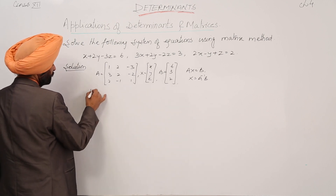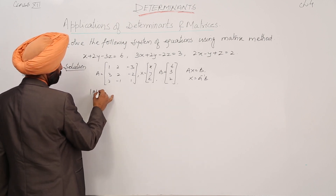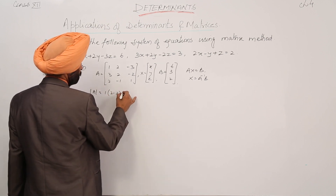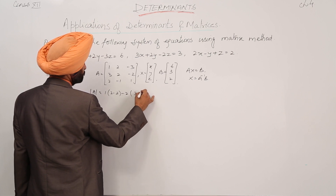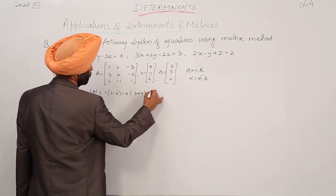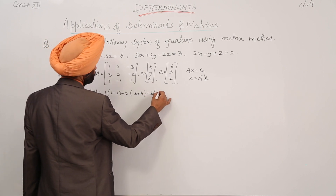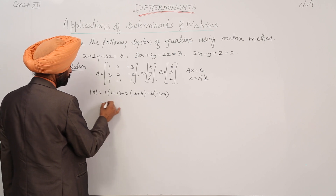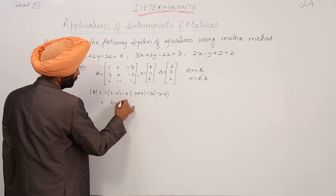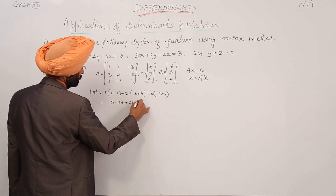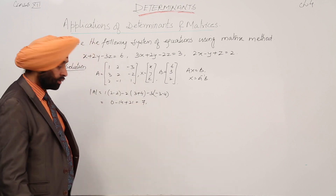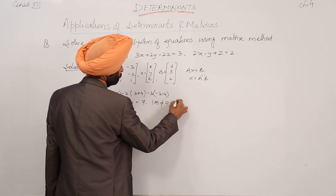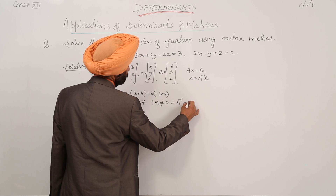After this, we are going to find the determinant. Determinant of A is equal to 1 with (2 minus 2), minus 2 with (3 plus 4), minus 3 with (minus 3 minus 4). This becomes 0 minus 14 plus 21, which is equal to 7. So determinant of A is not equal to 0, therefore A inverse exists.